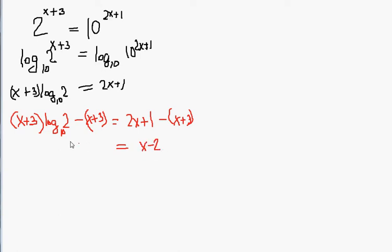And then on the left side, we would incorrectly cancel out the x plus 3s so that the log of 2 base 10 is all that remains. Then solve for x, we get x is equal to 2 plus the logarithm of 2 base 10. Now this is incorrect.